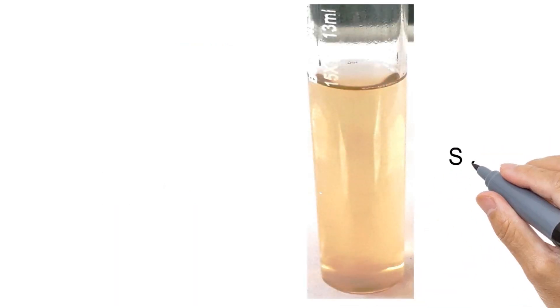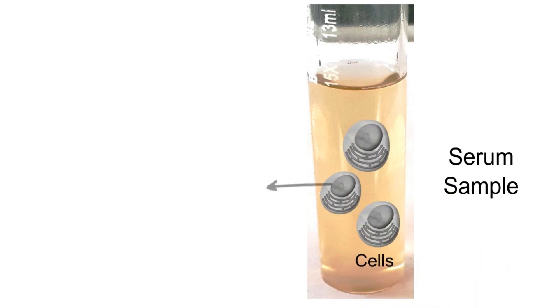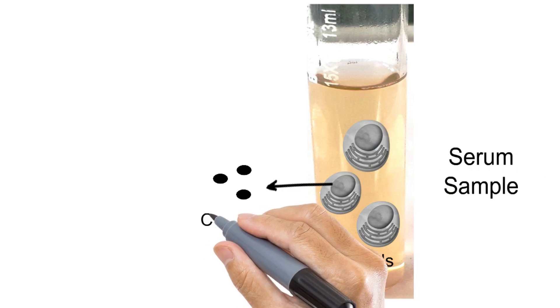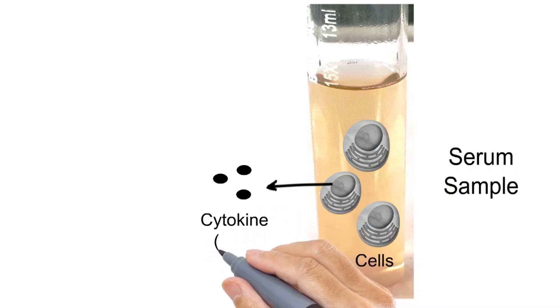Let us assume there is a serum sample and from this serum sample we want to detect and count the cells that produce a cytokine molecule called interleukin 2.